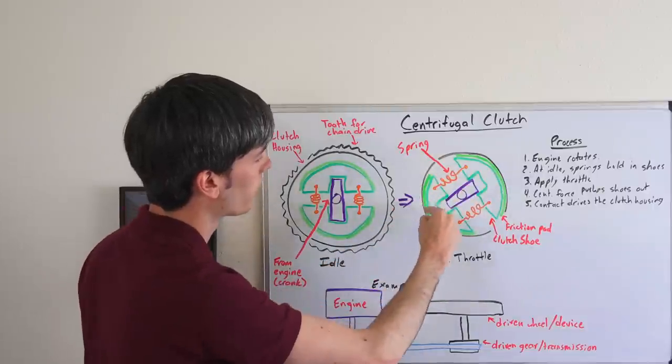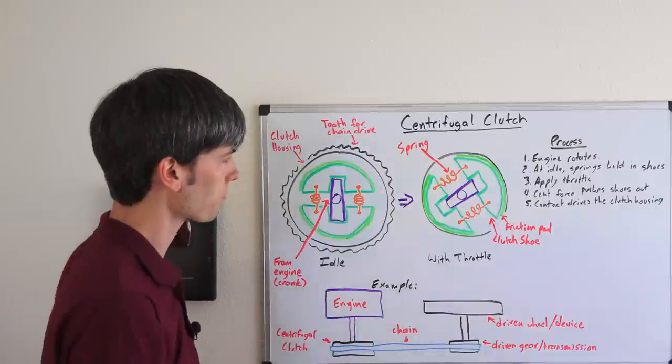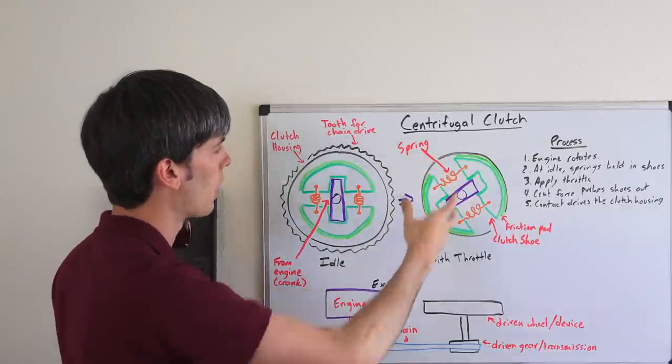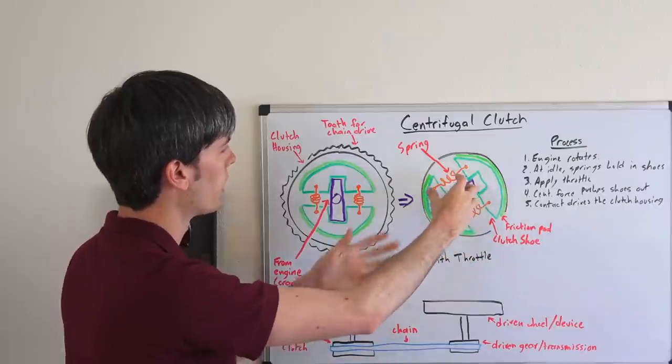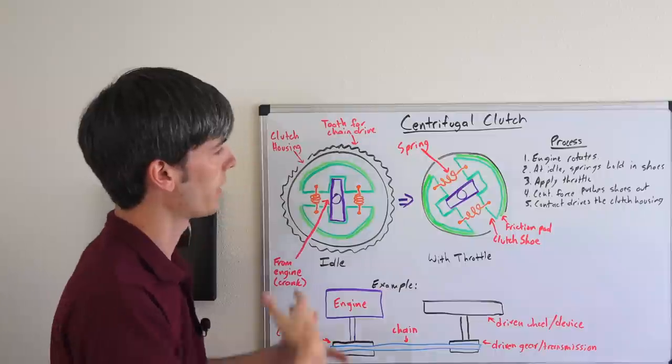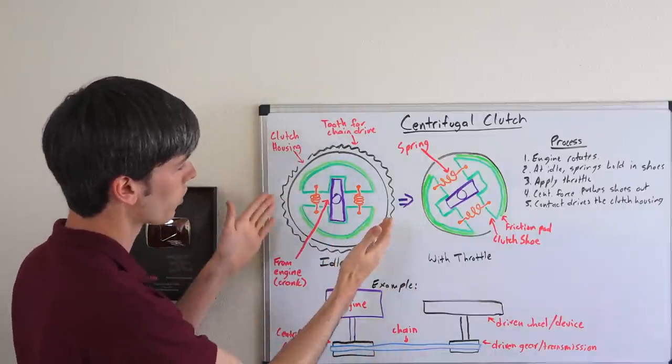And as they move out, those friction pads are going to press along this clutch housing and start to rotate it as well. Now it could get to the point where you lock up and then you have full torque from the engine supplied through this to the outer housing. And then you'll be driving whatever it is you were attempting to drive.